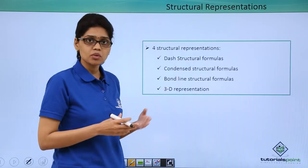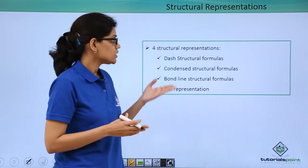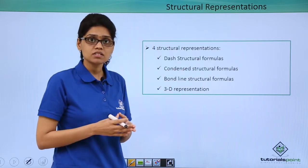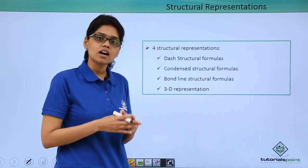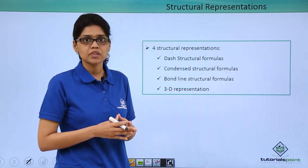The first one is dash structural formula, the second one is condensed structural representation, the third one is bond line representation, and the last one is 3D representation.